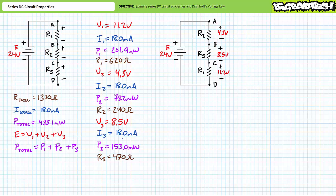Additionally, we learned that resistors in series add up and the largest resistor in a series circuit drops the largest amount of voltage and dissipates the largest amount of power. Conversely, the smallest resistor drops the smallest amount of voltage and dissipates the smallest amount of power. Finally, we learned that power in always equals power out and used this and other series circuit properties and Ohm's law to check our work. We made extensive use of Kirchhoff's voltage law to determine nodal voltages within series circuits and examine how the rearrangement of elements affects these properties.